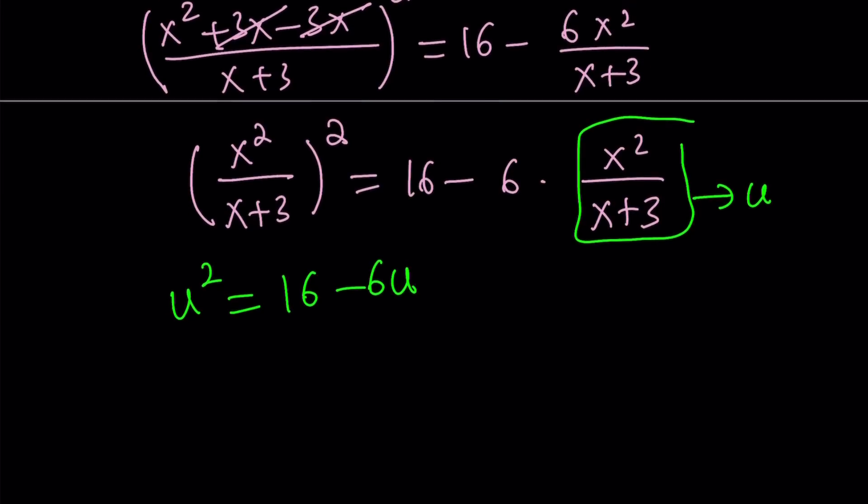And as you know, this is a quadratic equation. Let's go ahead and add 6u to both sides and then add 9 to both sides to complete the square. If you add 9, the left hand side becomes u plus 3, quantity squared.